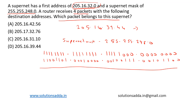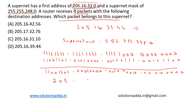Performing the AND operation, the result across all octets gives us 205.16.32.0. Since this matches the first address of the supernet, option D — 205.16.39.44 — is the correct answer.